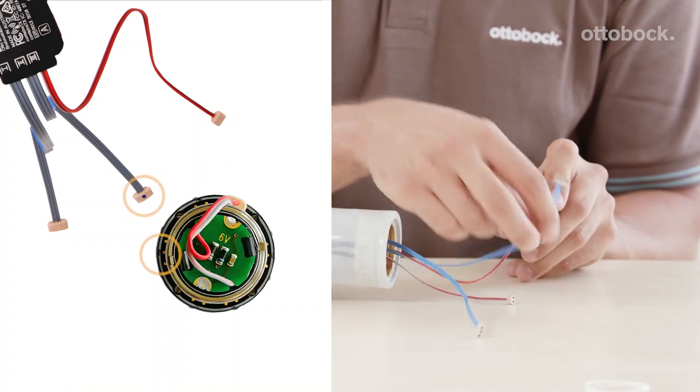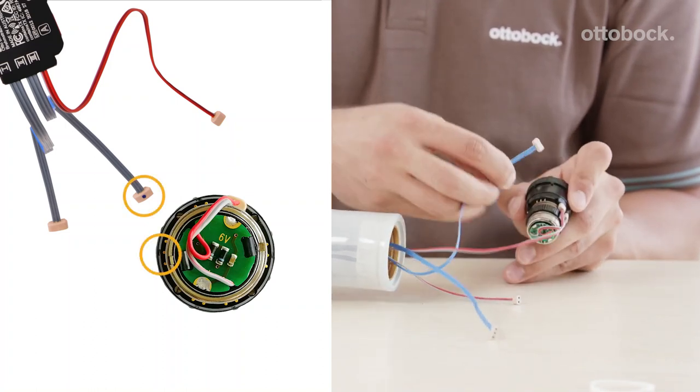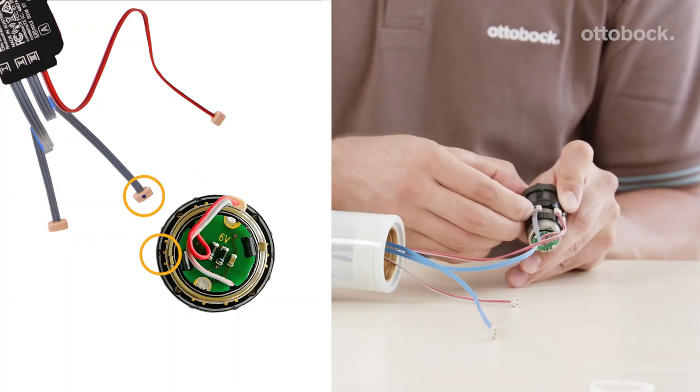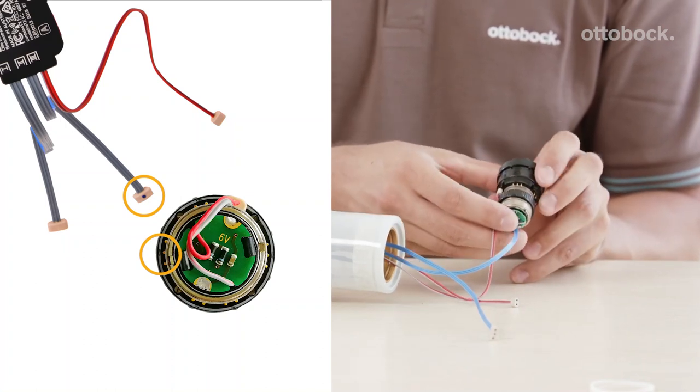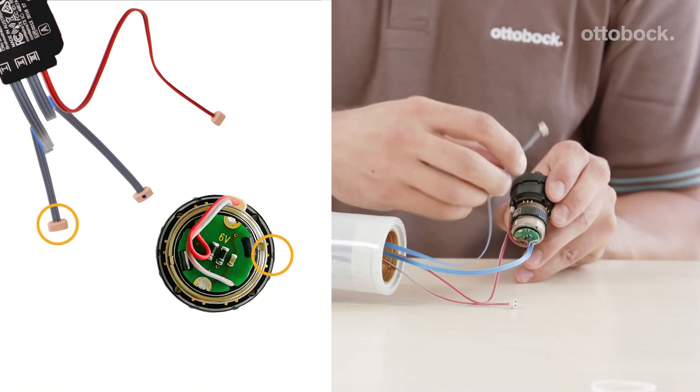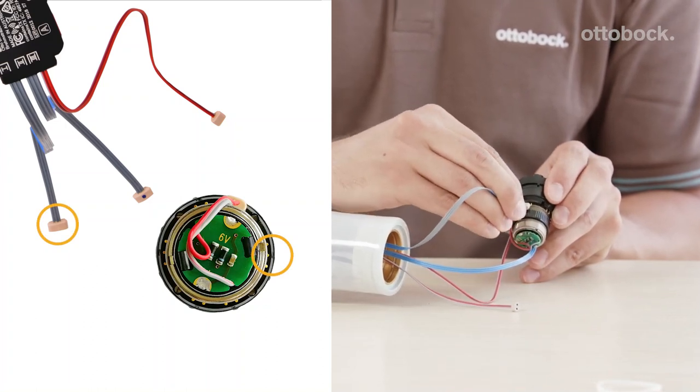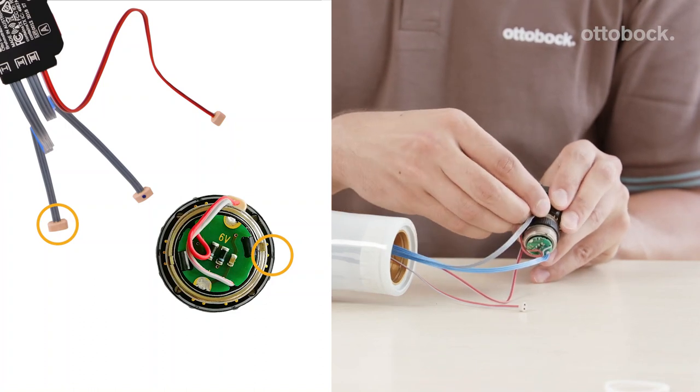Connect the three-polled cable with the blue dot of the Myo Plus TR to the left number 2 contact. Connect the three-polled cable with the blue dot of the Myo Plus TR to the right number 2 contact.